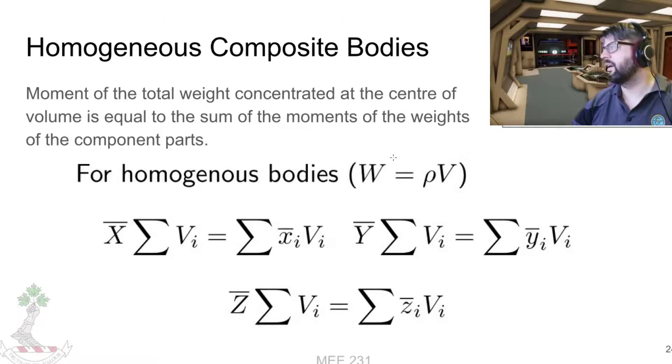Again, homogeneous composite bodies—same idea. As long as the density is the same, then the moment of the total weight concentrated at the center of the volume equals the moment. That's not always going to be the case for stuff that you're measuring the centroid for, but it will often be the case, especially for individual components. Obviously gets more complicated when you're trying to build machines out of components, or say airplanes—we're not going to have an airplane that's built completely out of homogeneous composite bodies.